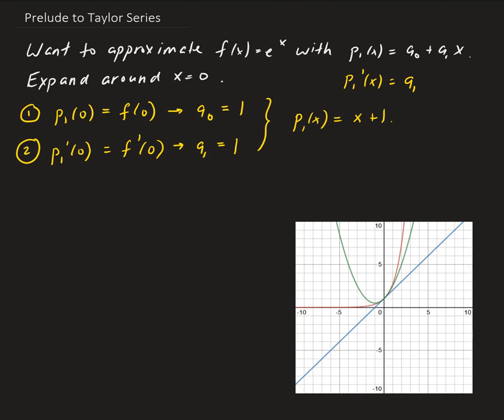If you look at the figure here, in red you see the exponential function, and the blue line represents x plus 1. This is the best we can do in terms of approximation using a first degree polynomial. It turns out this is nothing more than the tangent line at 0 — just another way of arriving at that result. However, we can do better, and to do better we need more information, so let's include the second derivative as a third condition.